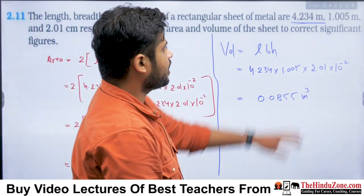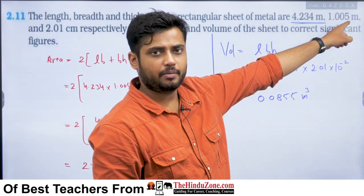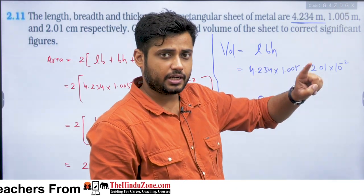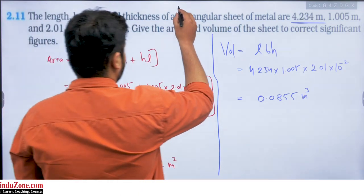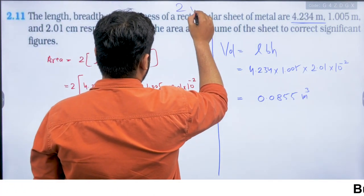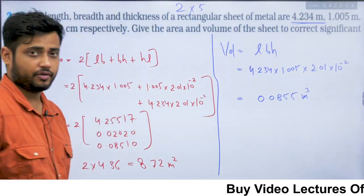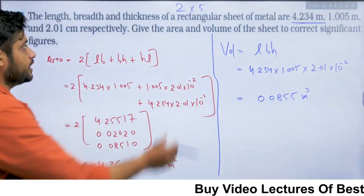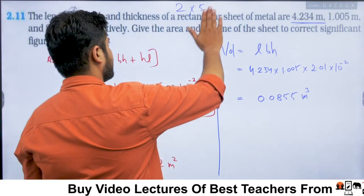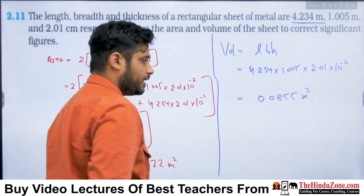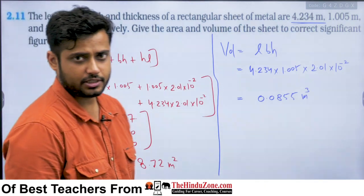If we have two numbers, one with 4 significant figures and another with 4 significant figures, then the answer can have 4 significant figures. But if one number has 2 significant figures and another has 5 significant figures, the final answer should have 2 significant figures. Multiplication and division are treated the same way.